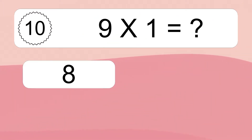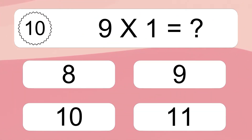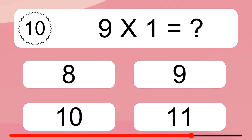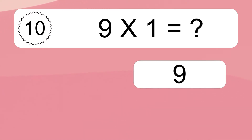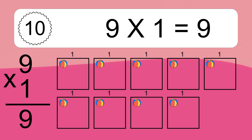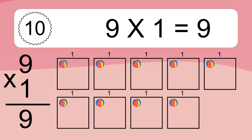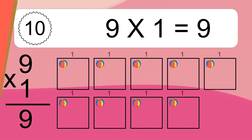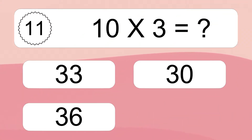9 times 1 equals what? 9 times 1 equals 9. We have 9 boxes and each box has 1 colorful ball inside. If you count all the balls in all the boxes together, you will have 9 times 1 balls. This equals 9 balls.